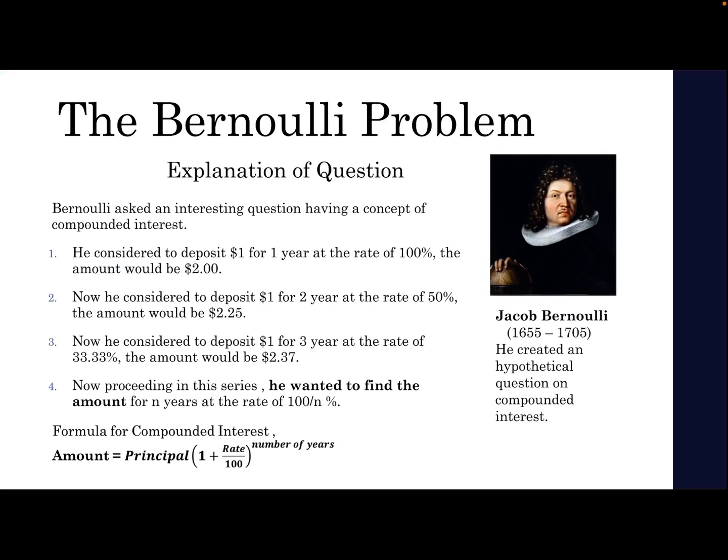Then an interest of 25% for four years would give us $2.44. If we go on, what would be the amount if the interest is 100 divided by n percent for n years, where n is a large number?